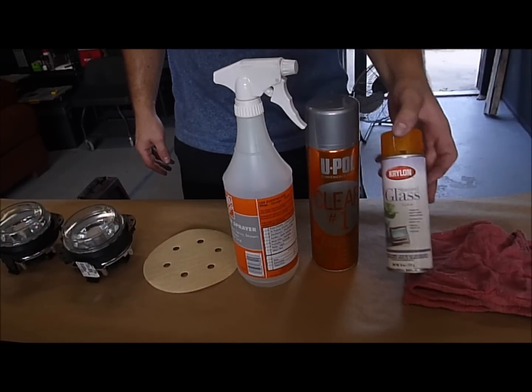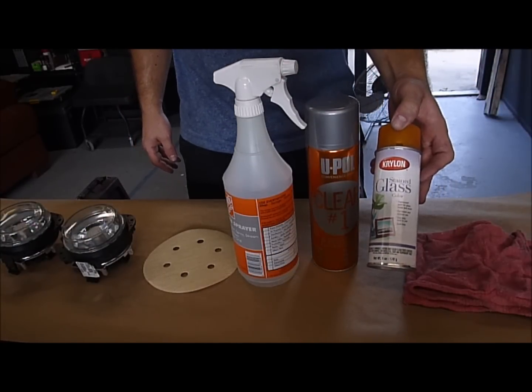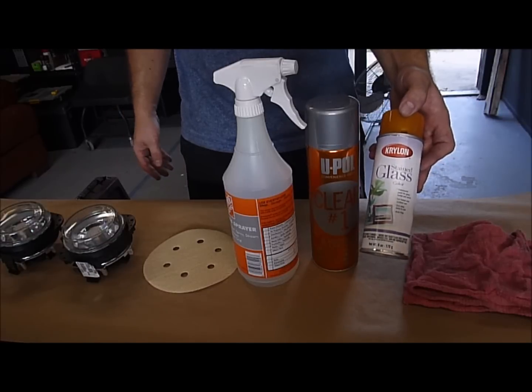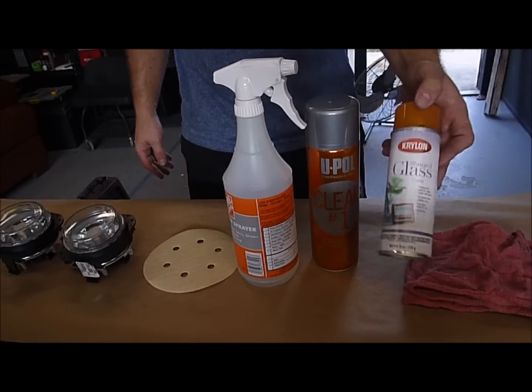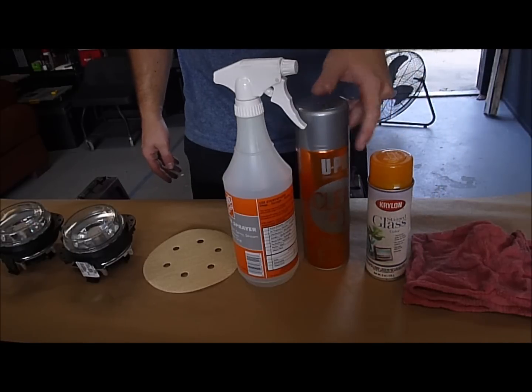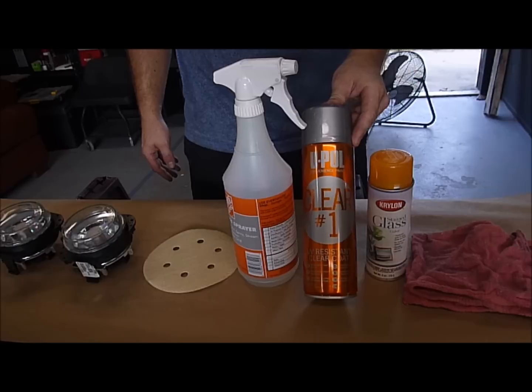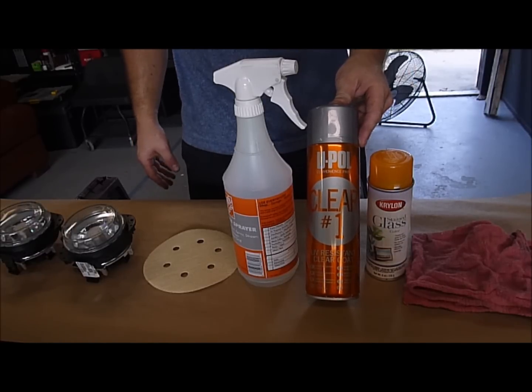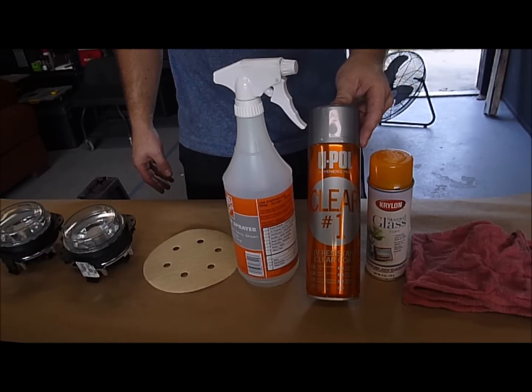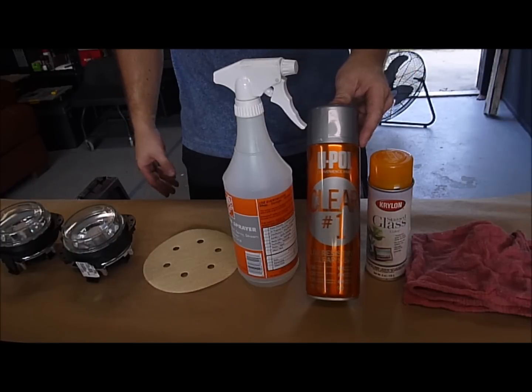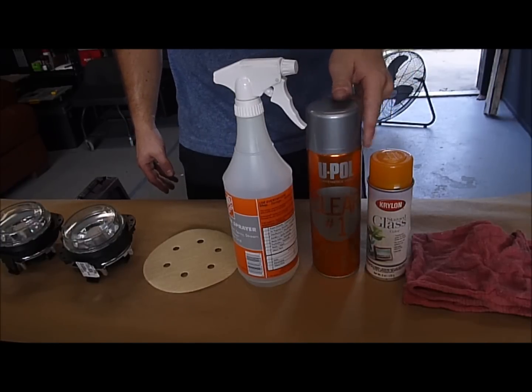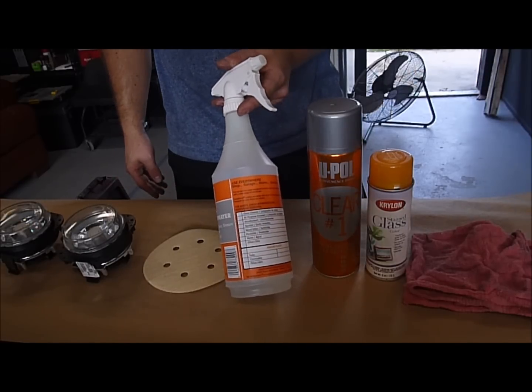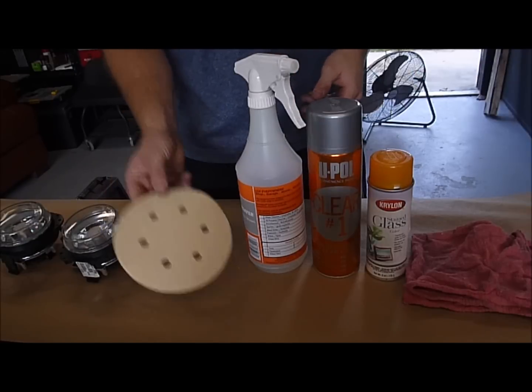You're going to need a rag, you're going to need a product by Krylon called Stained Glass. We're using the yellow to get the JDM look. They also have other colors available like reds and blues and different things like that, but again, we're using the yellow. There's a clear coat by UPOL called Clear Number 1. We're going to use this at the end. It's going to give it a little gloss. It's going to add some added protection to the housing, but definitely not a necessary step, just one that we're doing. Also, some isopropyl alcohol. Wax and grease remover works just fine as well. And some 220 grit sandpaper.